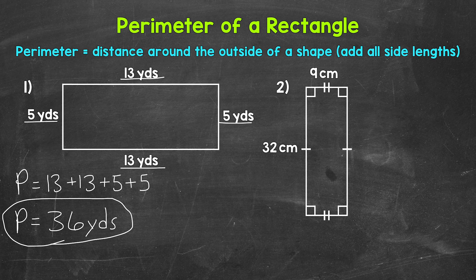Now I do want to mention, it doesn't matter what order you add those side lengths in. You'll get the correct perimeter however you do it, so something to keep in mind.